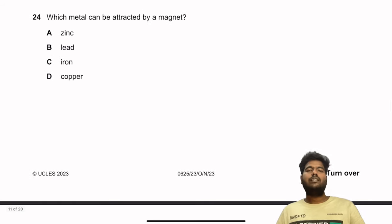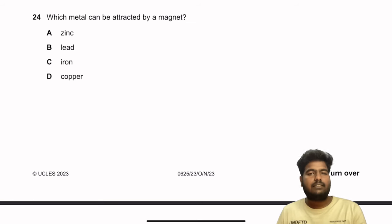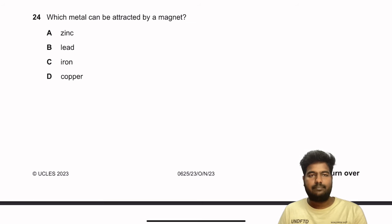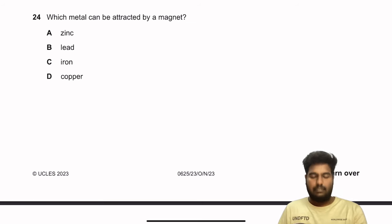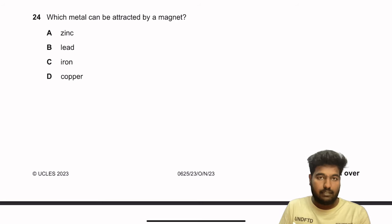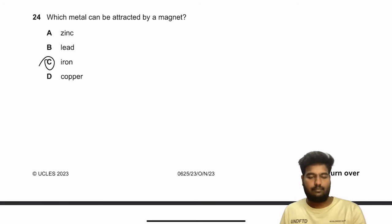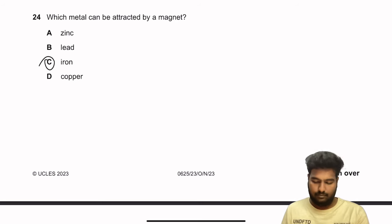Question 24: Which metal can be attracted by a magnet? Only iron is attracted by a magnet.